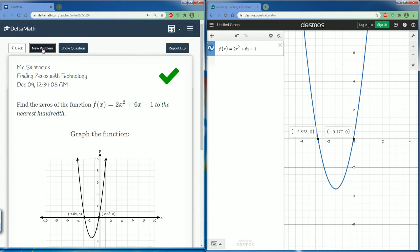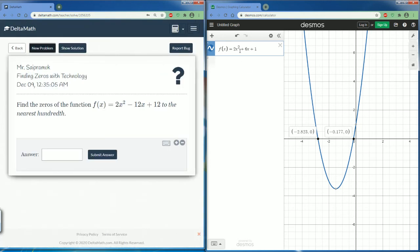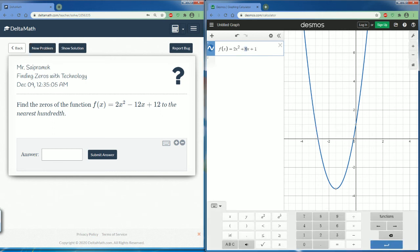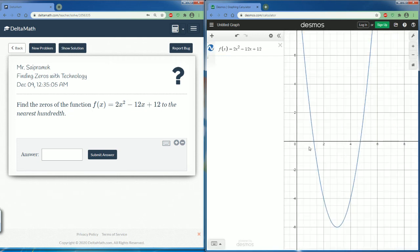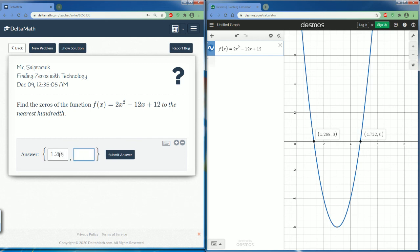Let's do one more problem. 2x² - 12x + 12. Move this. We see that there are two positive solutions. So the answer here would be 1.268 comma. The other one is 4.732.